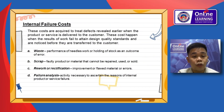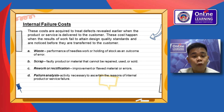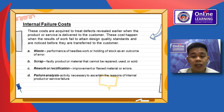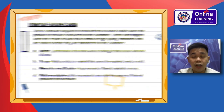For internal failure costs, these costs are incurred to address defects discovered before the product or service is delivered to the customer. These include: waste — performance of unnecessary work or holding of stock as a result of errors; scrap — faulty products or materials that cannot be repaired, used, or sold; rework or rectification — correction of faulty materials or errors; and failure analysis — activity necessary to determine the cause of internal product or service failure.